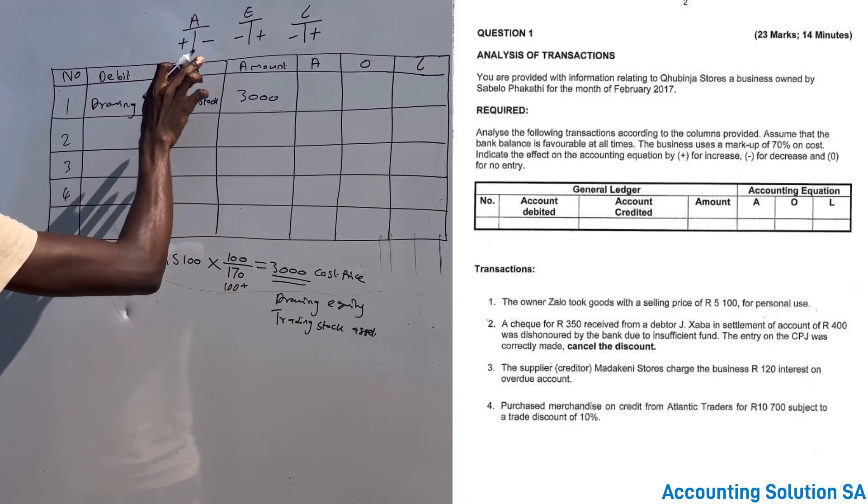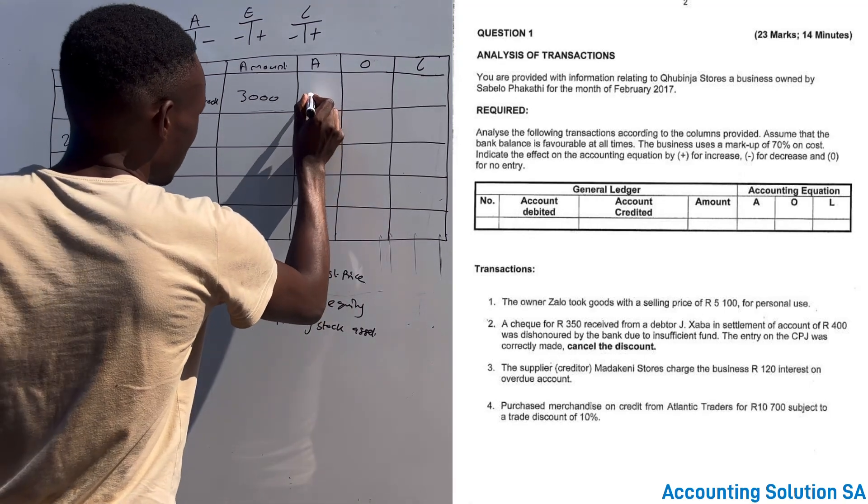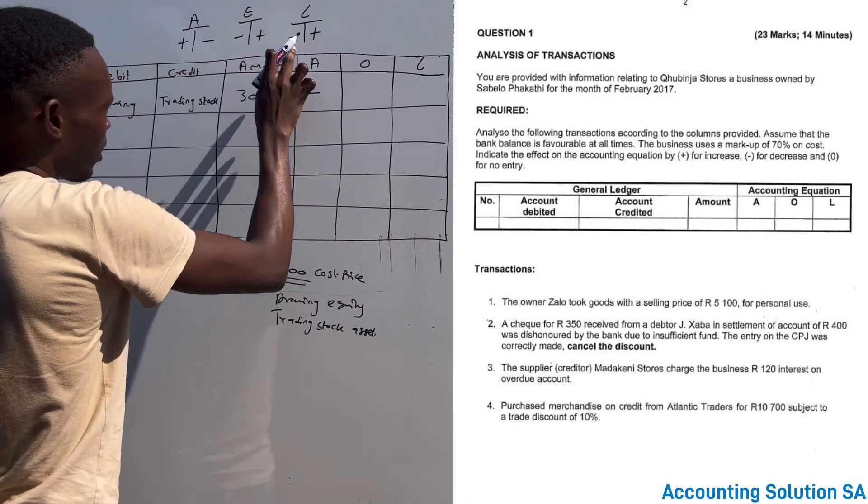Because drawings reduce equity. Then now we have to show that under assets we subtracted, under equity we also subtracted, and this side is unchanged.